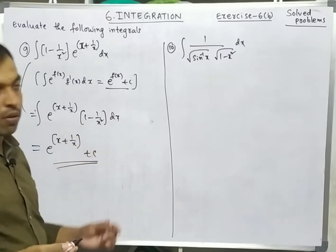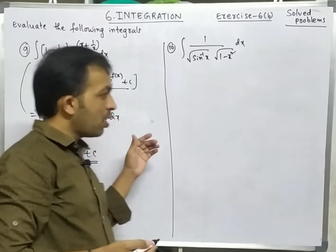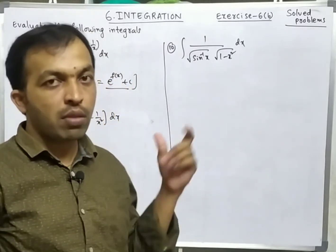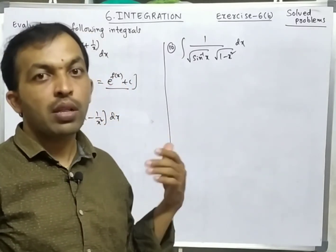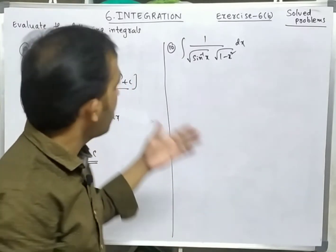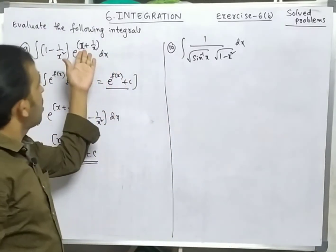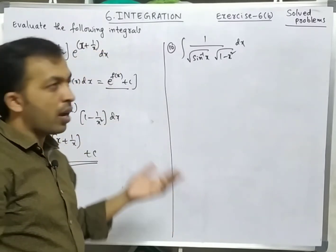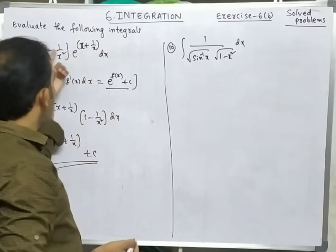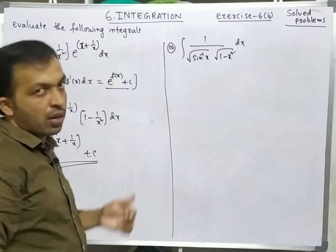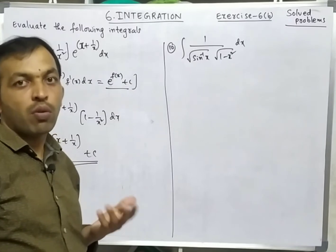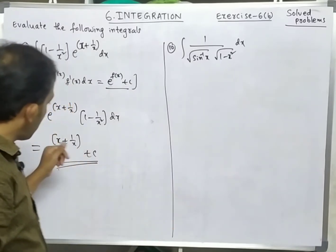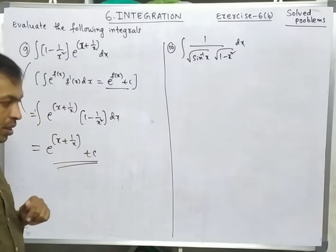If you want to solve this problem by substitution method, let x + 1/x = t, then (1 - 1/x²) dx = dt, giving integration of e^t dt = e^t, then substitute back to get e^(x+1/x) + c.